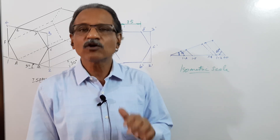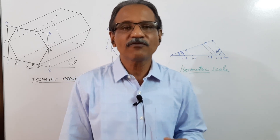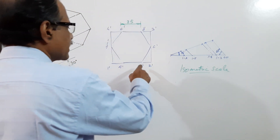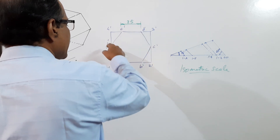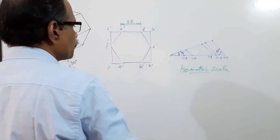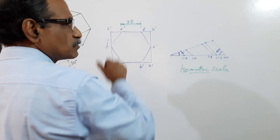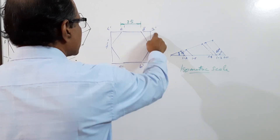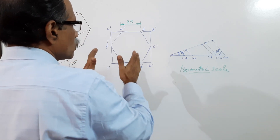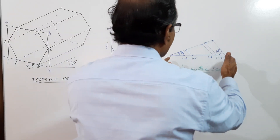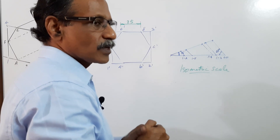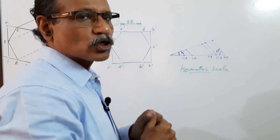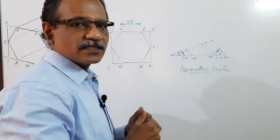First of all, I draw a hexagon: a-dash, b-dash, c-dash, d-dash, e-dash, f-dash, with 25 mm side. Then I inscribe it in a rectangle: 1-dash, 2-dash, 3-dash, 4-dash. Now I construct an isometric scale. To construct an isometric scale, take the largest distance on the object — the largest distance is 60 mm, which is the length.